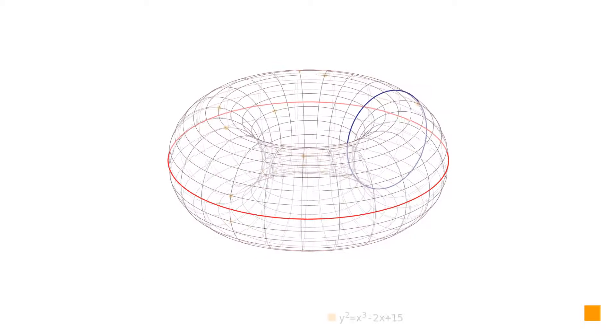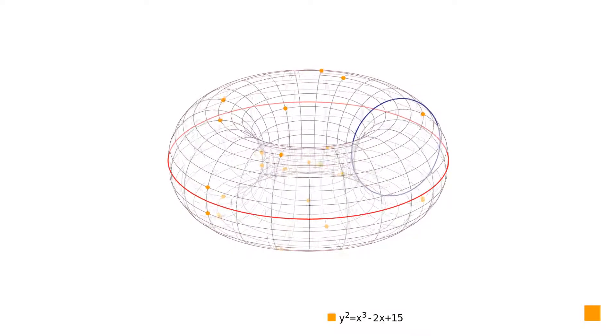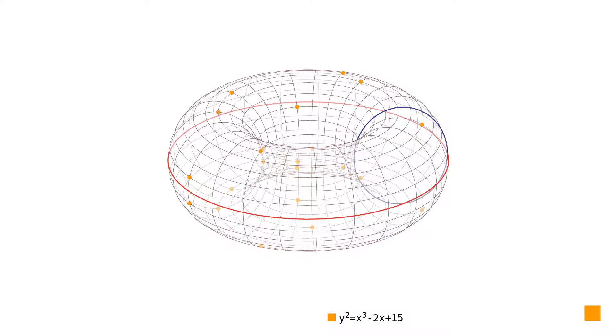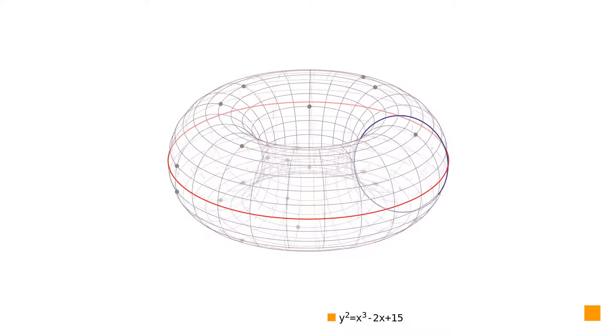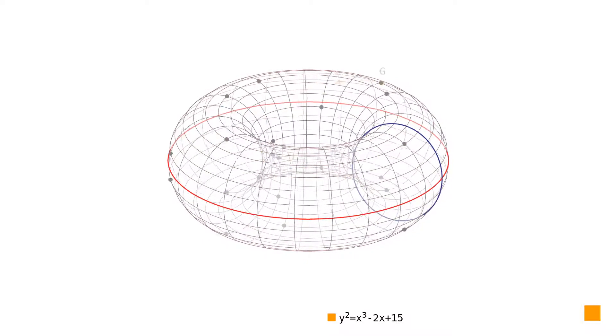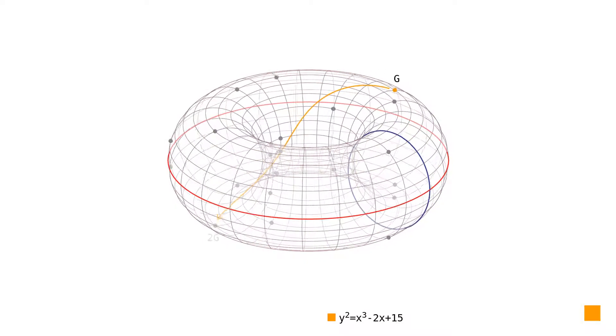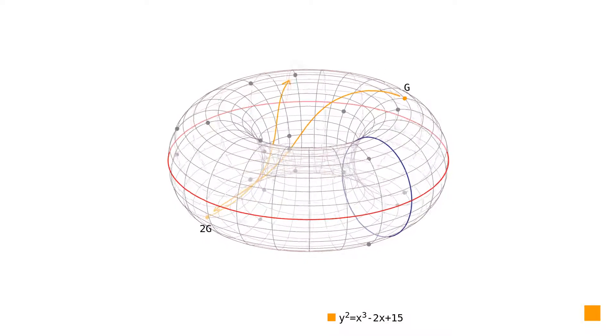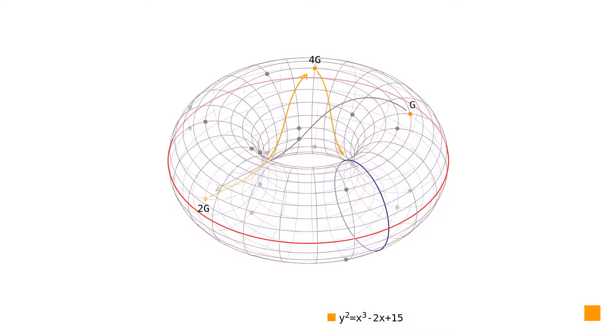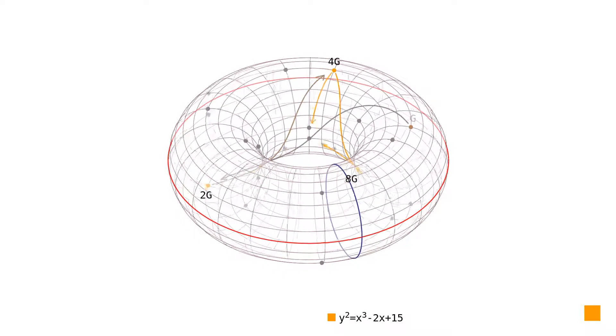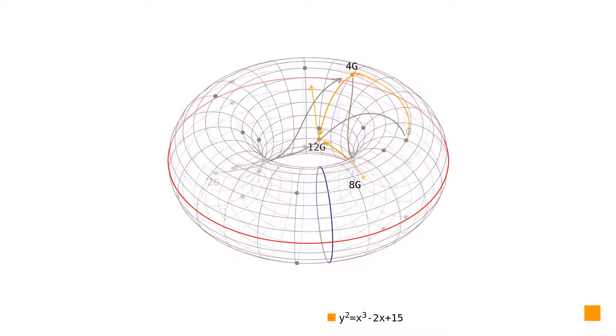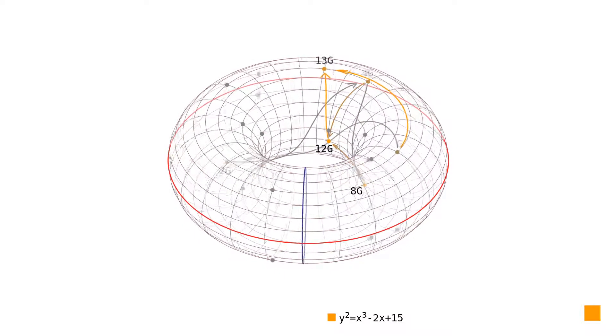Last time we showed how to perform scalar multiplication efficiently. We chose a generator and by repeated doubling and adding of points, we calculated the thirteenth multiple of this generator point.